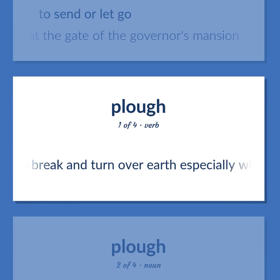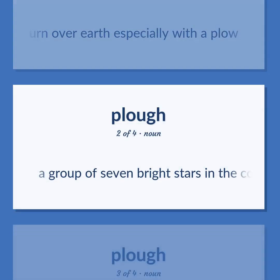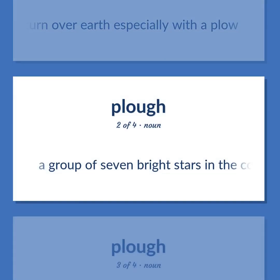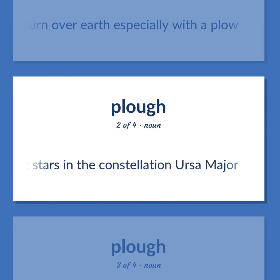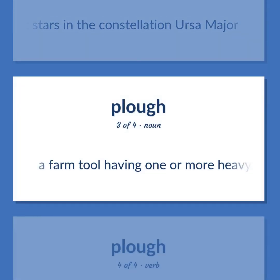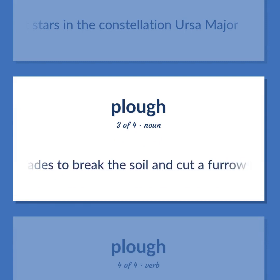Plow: to break and turn over earth, especially with a plow. A group of seven bright stars in the constellation Ursa Major. A farm tool having one or more heavy blades to break the soil and cut a furrow prior to sowing.